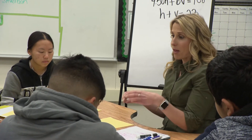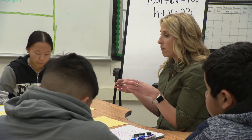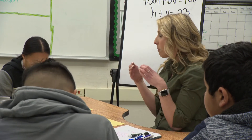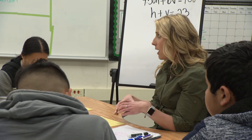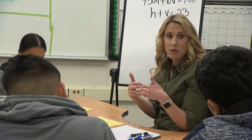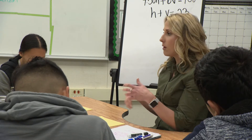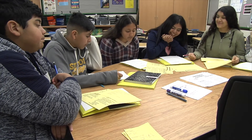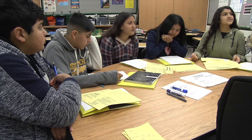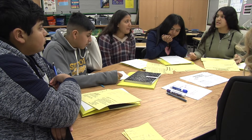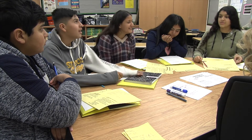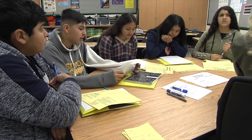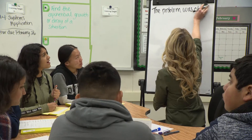I want you guys to get some individual processing time and look at just the math that we did on Friday, and we're going to try to verbally share with each other how we solved that before we get into the writing part. The problem was about families — how many people ate hamburgers and how many people had veggie lunches — 23 before going to a picnic.